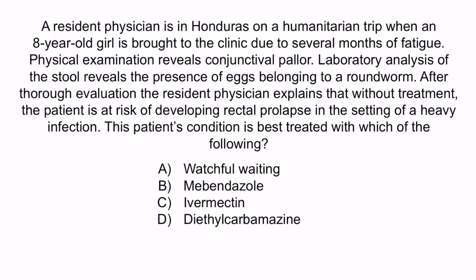From the question you can see that this girl has anemia, which we can conclude based upon the fatigue and conjunctival pallor. However, laboratory analysis has also confirmed that the anemia is due to a roundworm. Finally, the resident concludes that this infection increases the risk of developing rectal prolapse.